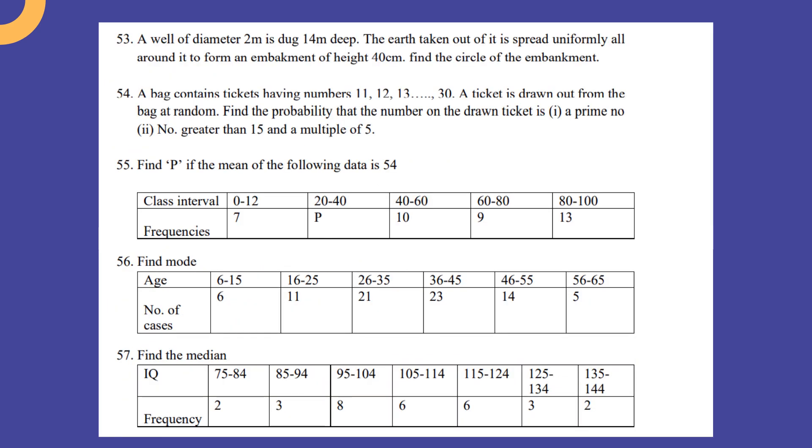A well of diameter 2 meter is dug 14 meter deep. The earth taken out of it is spread uniformly all around it to form an embankment of height 40 centimeter. Find the width of the embankment.